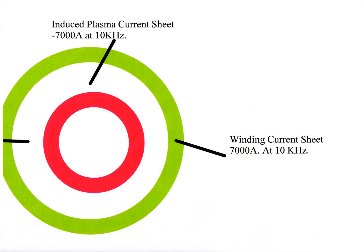The winding current is 7000A at 10kHz. The capacitance of the coil is the tuning capacitance, so there is no need to have a separate capacitor.